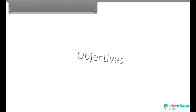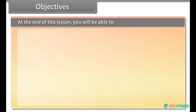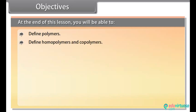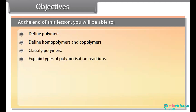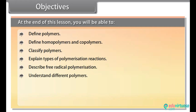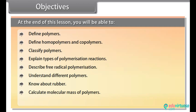Objectives: At the end of this lesson, you will be able to define polymers, define homopolymers and copolymers, classify polymers, explain types of polymerization reactions, describe free radical polymerization, understand different polymers, know about rubber, calculate molecular mass of polymers, and define biodegradable polymers.